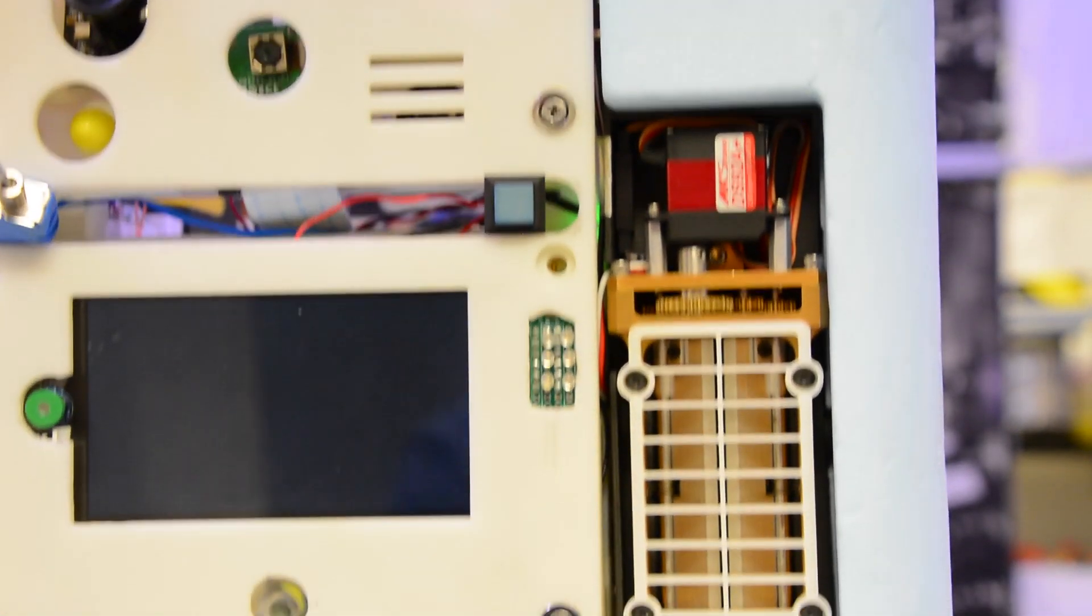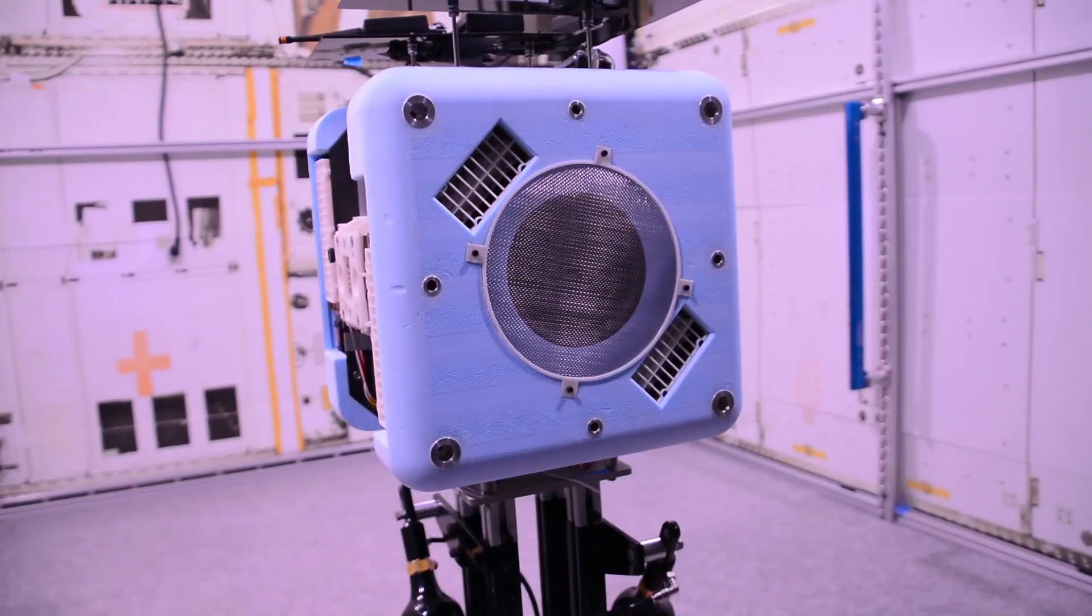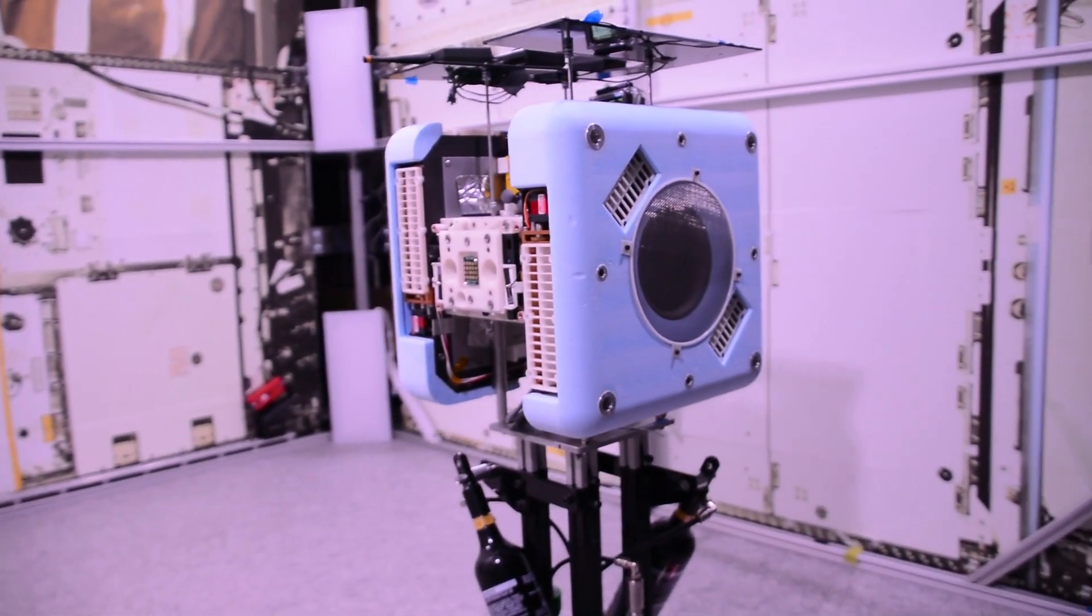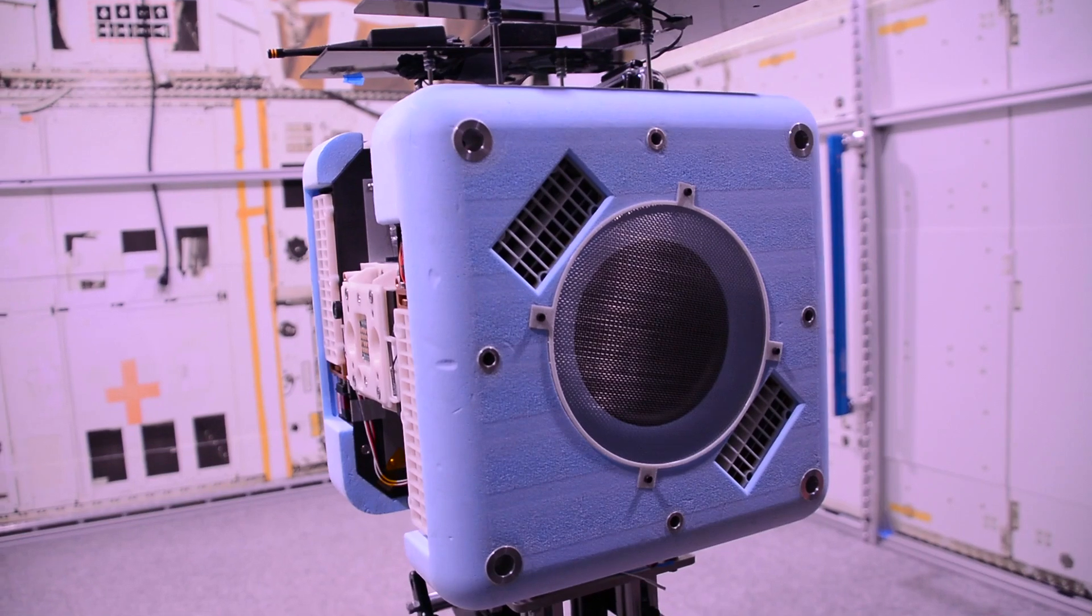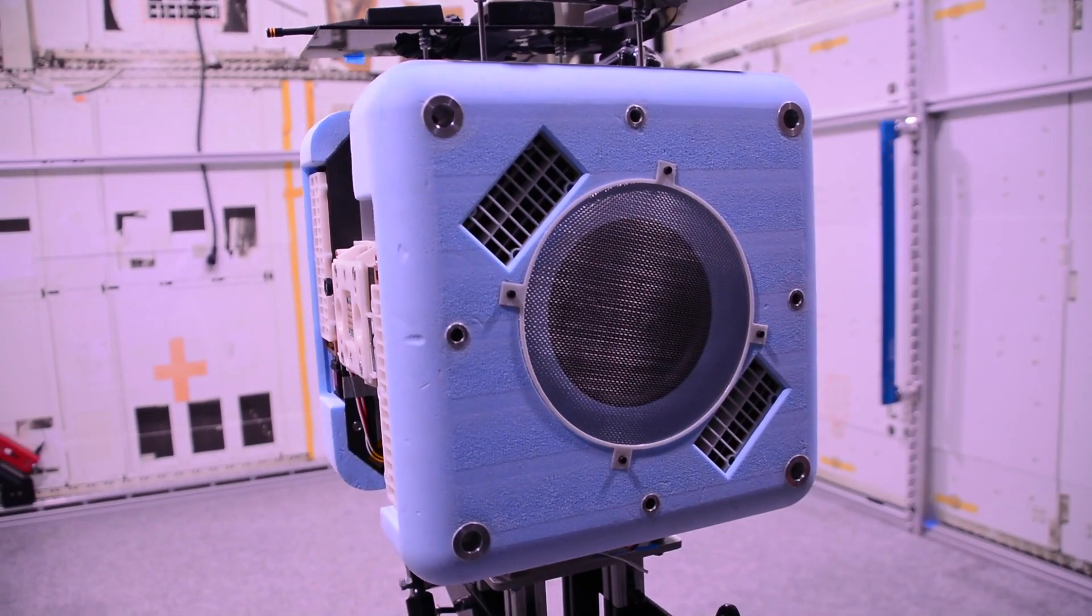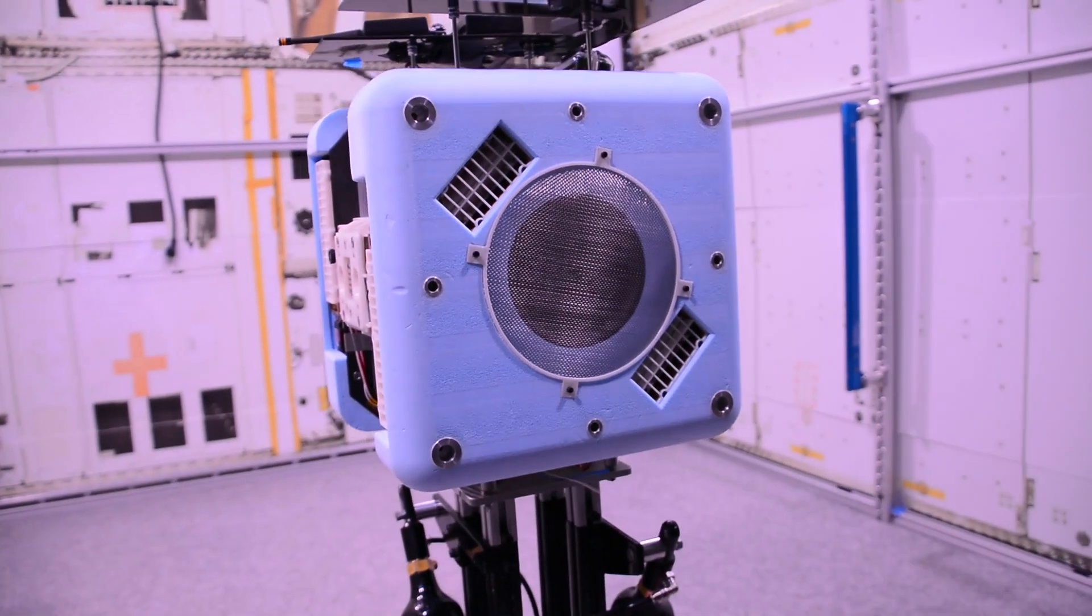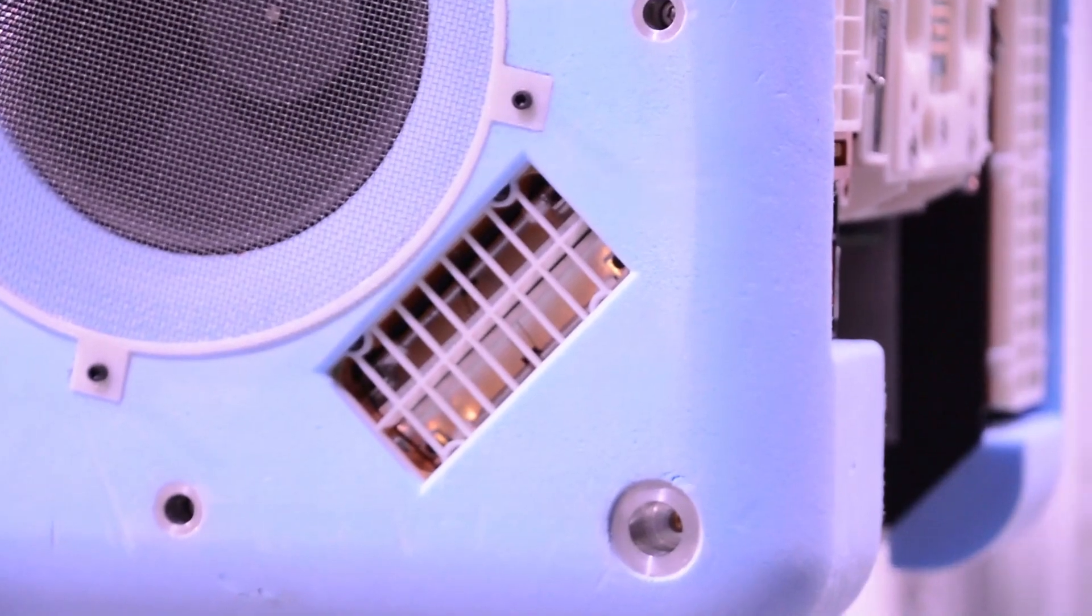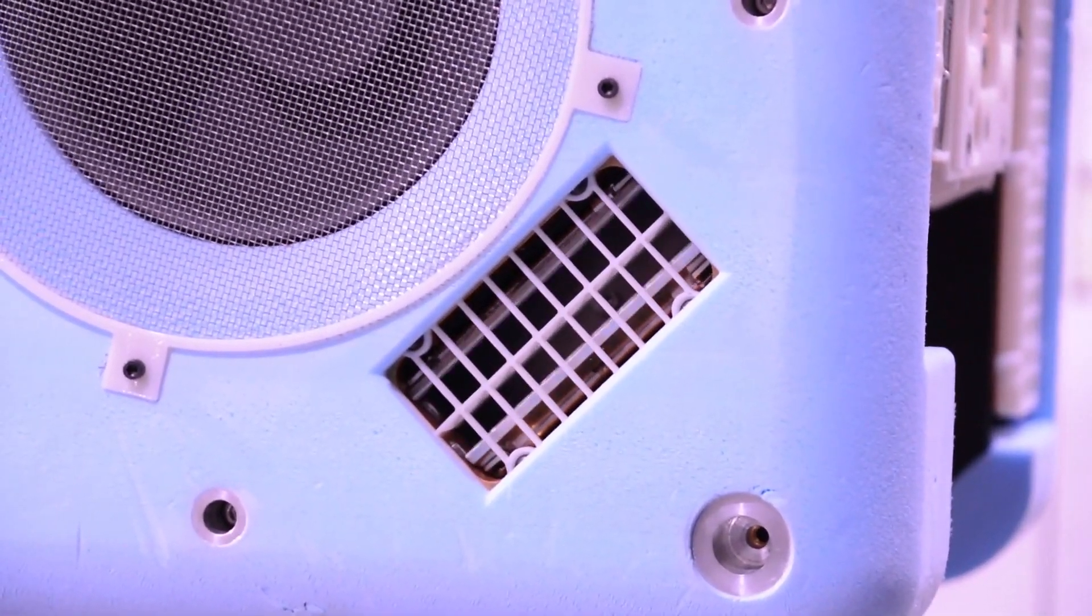The first thing you'll notice is the robot has a central module surrounded by two propulsion modules. The two propulsion modules provide six-degree-of-freedom holonomic control for the robot. Each of them contains a central impeller. That's a centrifugal fan. It draws air in this way. It pressurizes the plenum inside, and then the nozzles allow a different amount of air out of each nozzle to control the thrust level.